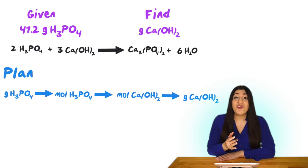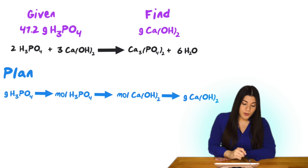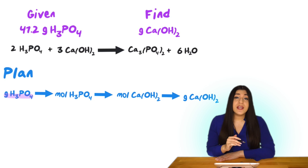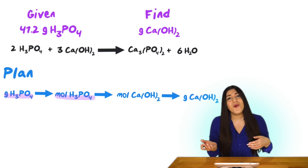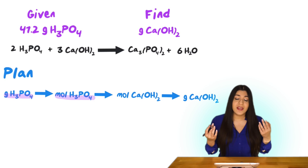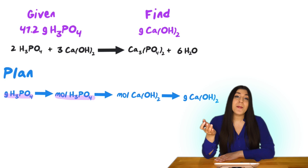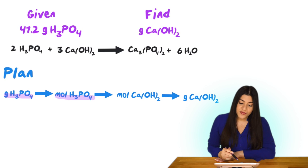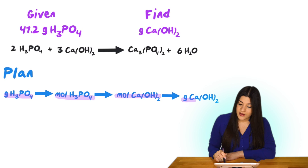Let's build a plan. We're going to start with our given unit — grams of phosphoric acid — then make our way to moles of phosphoric acid using the molar mass. Whenever we go from grams to moles or moles to grams, we use the molar mass as our conversion factor. Since we're looking for a completely different compound, that tells us we need a mole-to-mole ratio from the balanced equation coefficients. From moles of phosphoric acid we get moles of calcium hydroxide, and then we'll use the molar mass of calcium hydroxide to end with grams of calcium hydroxide.